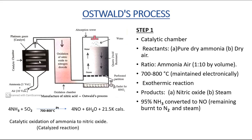Step one takes place in the catalytic chamber, where catalytic oxidation of ammonia occurs. Pure dry ammonia (1 volume) and dry air (10 volumes) are passed through this chamber. The temperature is maintained between 700 to 800 degrees Celsius. Ammonia gets oxidized in the presence of a platinum catalyst to produce nitric oxide and water, evolving 21.5 kilocalories of heat — an exothermic reaction. 95% of ammonia is converted to nitric oxide; the remaining 5% is burned to nitrogen and steam.